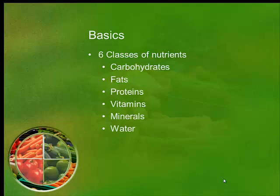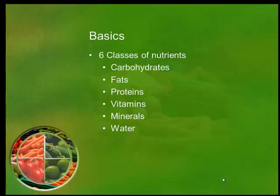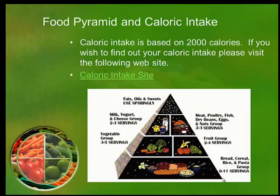Carbohydrates, fats, and sometimes proteins give us an actual energy source — that adenosine triphosphate we talked about earlier with our energy systems. Vitamins, minerals, and water are just essential to helping those processes along. We're going to go through some of these more in depth in a few slides.